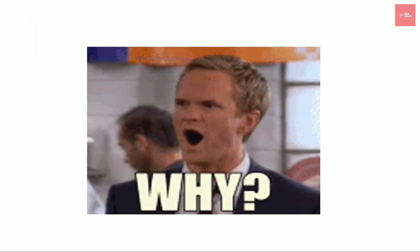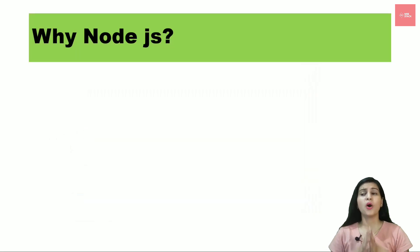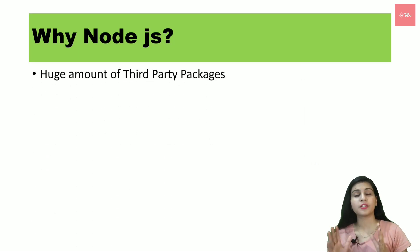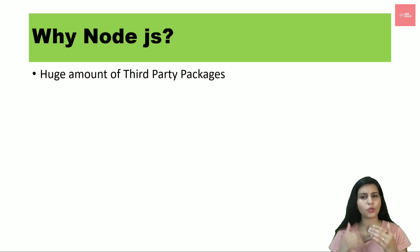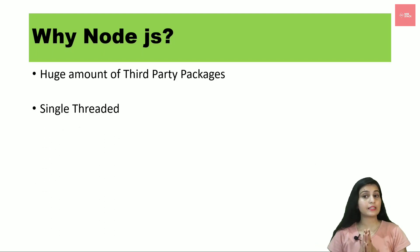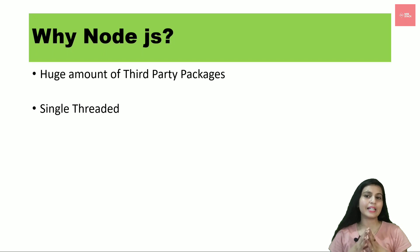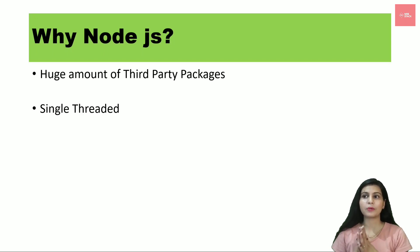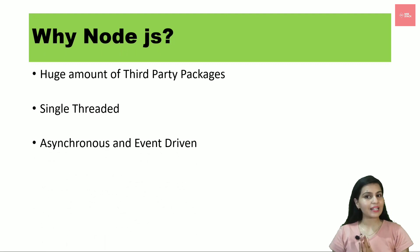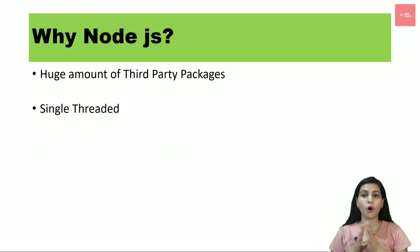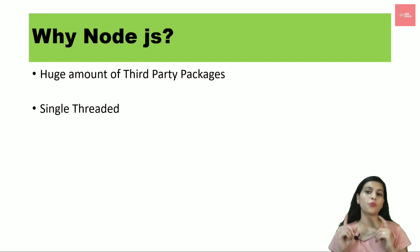Why do we need Node.js when we already have Ruby on Rails, Python, Django, and others? First, Node.js has a large number of third-party packages, which we will explore throughout this series. Second, it is single-threaded. Unlike Java, which uses multiple threads for multiple tasks, Node.js has a single thread and executes all multiple tasks with that single thread.